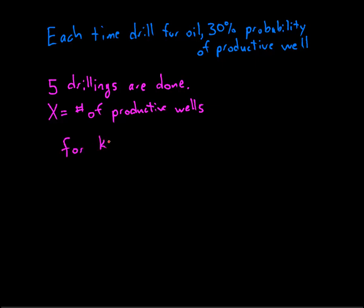So my possible k values are zero, one, two, three, four, and five. And rather than making a table I'm just going to go ahead and go straight to the formula for a binomial distribution.